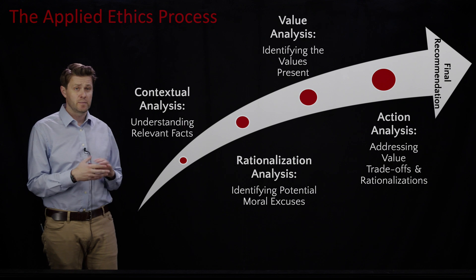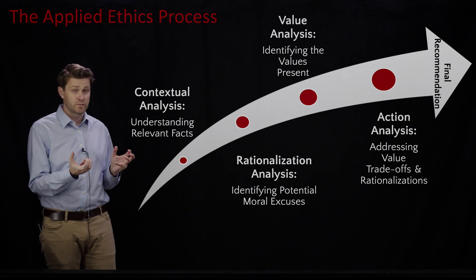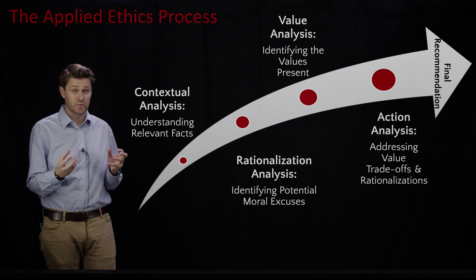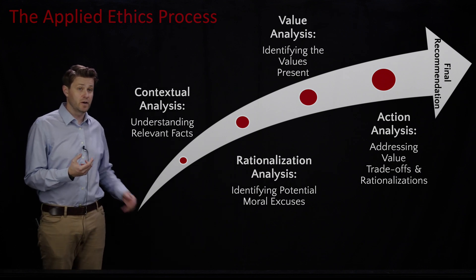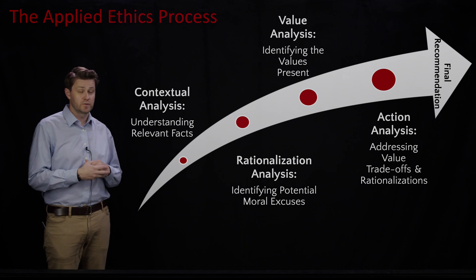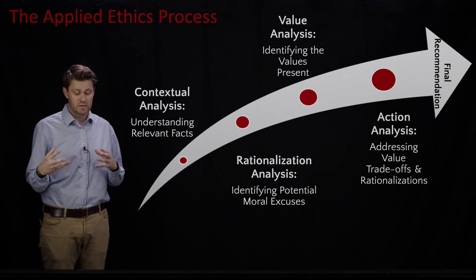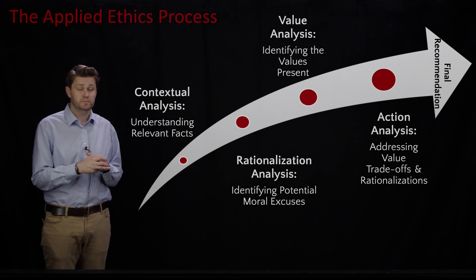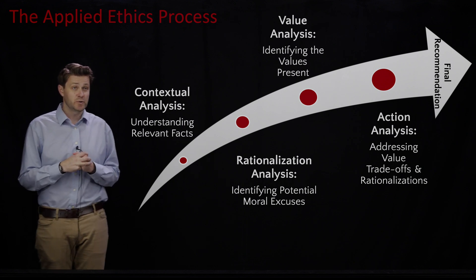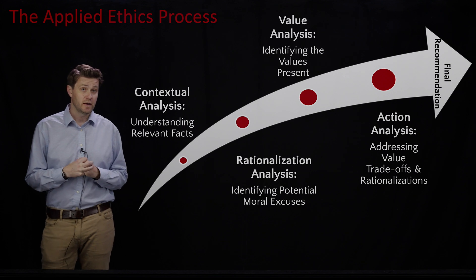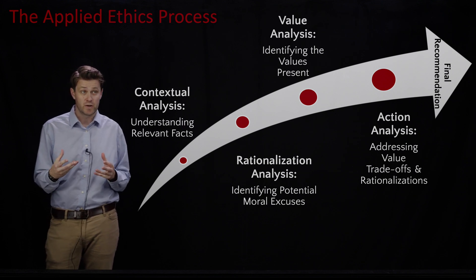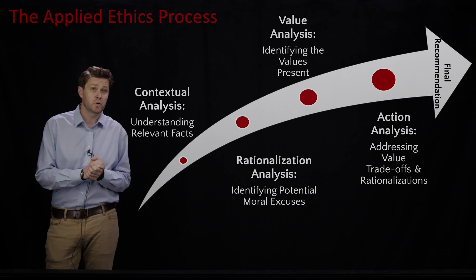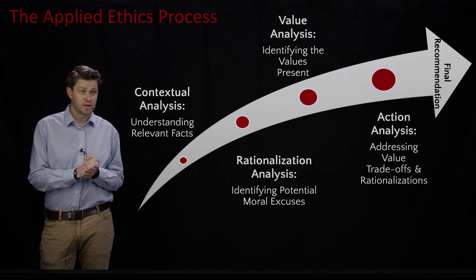We start out with thinking about the fact pattern — what facts are relevant here, what creates the context, what creates the moral importance to the situation. Then we have to think about the moral excuses as the rationalization analysis: what moral excuses are or could be showing up. The next step is a value analysis, thinking about if one or more of our five values are involved in the situation. And then finally, what we're doing now: thinking about the action analysis.